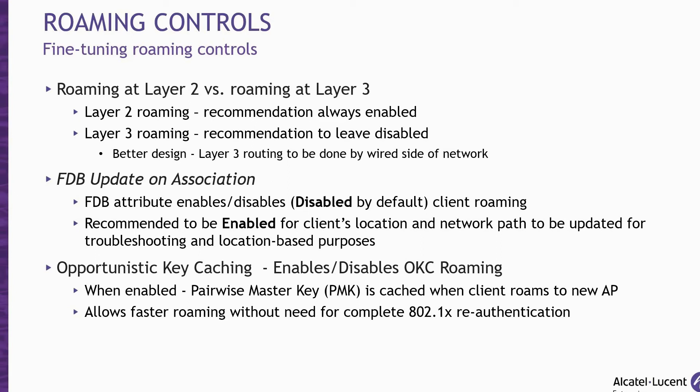Layer 2 roaming is recommended to always be enabled. However, I have a different philosophy for Layer 3 roaming. The Layer 3 roaming attribute is used to enable or disable Layer 3 roaming functionality — it is disabled by default. The functionality of Layer 3 roaming allows clients to move between APs with access to other subnets and VLANs. We recommend for this parameter to remain disabled. If Layer 3 access is required for the Wi-Fi client, then it should be routed through the wider side of the network for better control via policies and ACLs through the higher-performing Layer 3 switches.